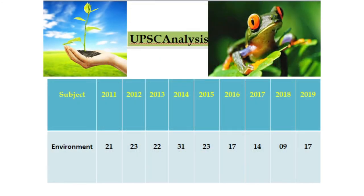Let us take a review of previous year question analysis. From 2011 to 2019, the environmental subject carried the following questions: 2011 — 21 questions (42 marks, as 1 question equals 2 marks); 2012 — 23 questions; 2013 — 22 questions; 2014 — 31 questions; 2015 — 23 questions; 2016 — 17 questions; 2017 — 14 questions; 2018 — 9 questions; 2019 — 17 questions. On an average, 18 to 20 questions were there from this section.